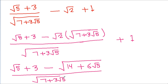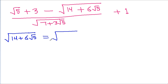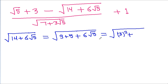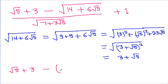A square root of (7 plus 3 root 5) plus 1 and a square root of (14 plus 6 root 5): 14 is 9 plus 5, plus 6 root 5, which is a square root of (3 squared plus root 5 squared plus 2 times 3 times root 5), equal to a square root of (3 plus root 5) squared, which equals 3 plus root 5.